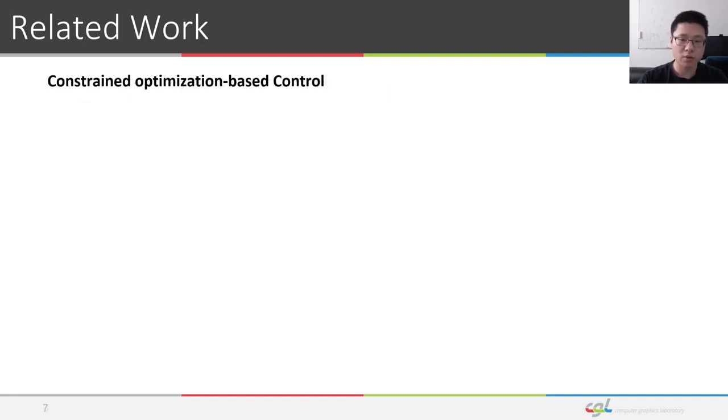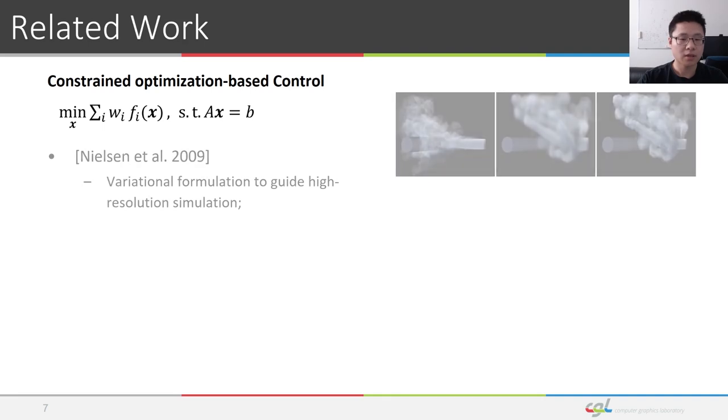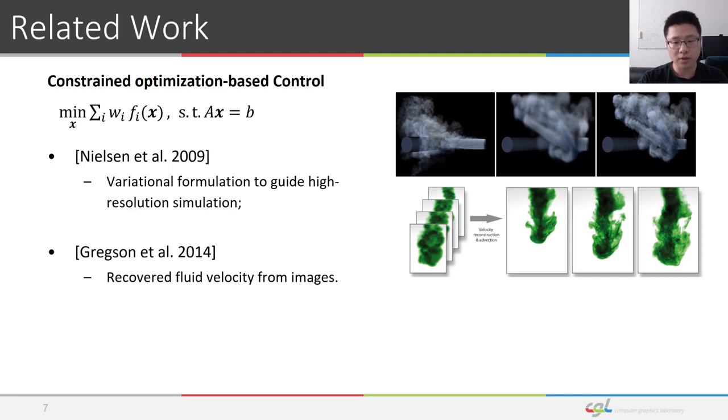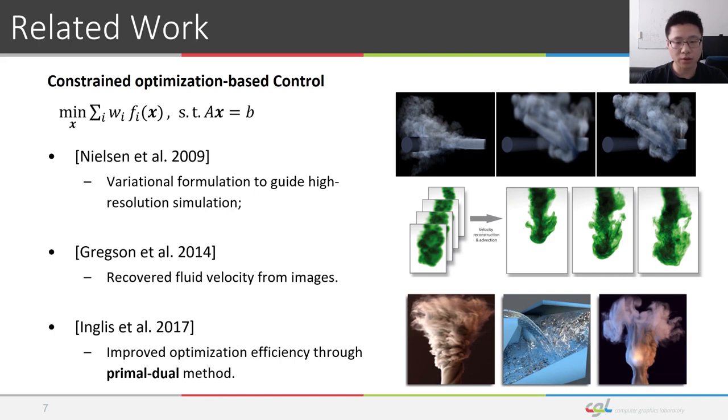Another set of work falls into the range of constraint optimization-based control. The pressure projection step can be formulated as a linear constraint of the optimization process to enforce incompressibility while optimizing specific objectives. Nielsen et al. used this idea to guide high-resolution flows to match simulations from coarse resolutions. Gregson et al. adopted a similar strategy to recover fluid velocities matching low-resolution velocity fields obtained by thermographic scanning. Inglis et al. further improved the constraint optimization efficiency through the primal dual method, applying the method in smoke guiding as well as separating solid wall boundary conditions.